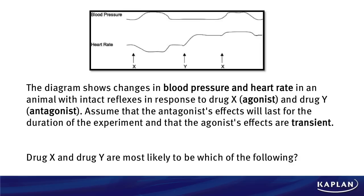Now figuring out what drug Y is: look at the diagram. When we give drug Y, there's no impact on blood pressure whatsoever, and all that happens is heart rate goes up. The only one of those three — atropine, phentolamine, and propranolol — that would do that is atropine. That's pharmacology background knowledge that you have to have to get this correct on test day.